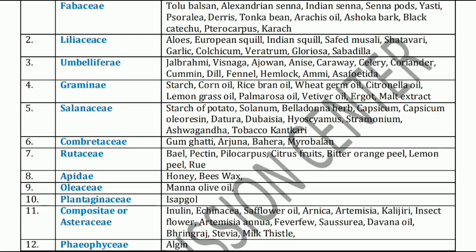Next is Liliaceae family. Liliaceae family mainly includes Aloe, European squill, Indian squill, Safed musli, Shatavari, Garlic, Colchicum, Veratrum, Gloriosa, and Sabadilla.